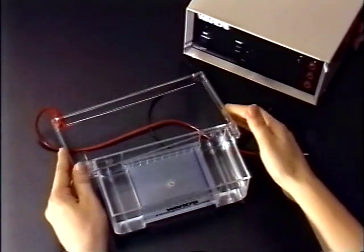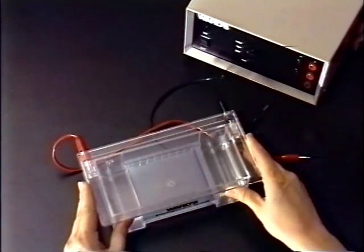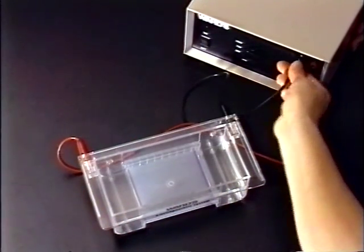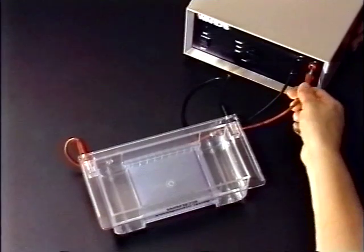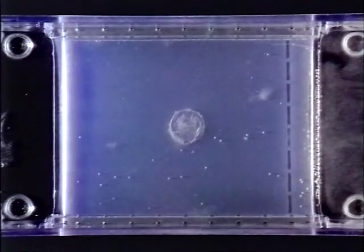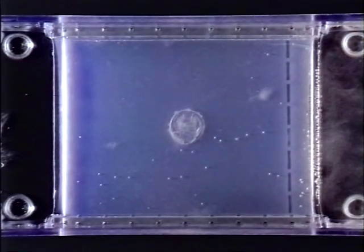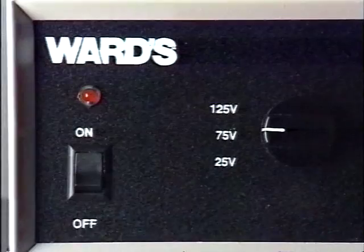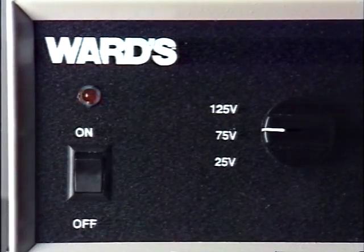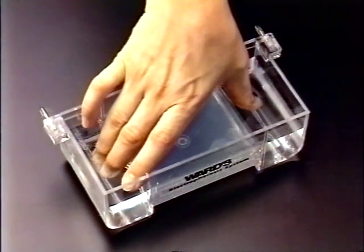Place the top on your chamber. Connect the leads to your power supply and turn it on. The tracking dye begins to migrate towards the anode. When the tracking dye nears the end of the gel, the gel run end point. Turn off the power supply and unplug it. Remove the gel and casting tray.